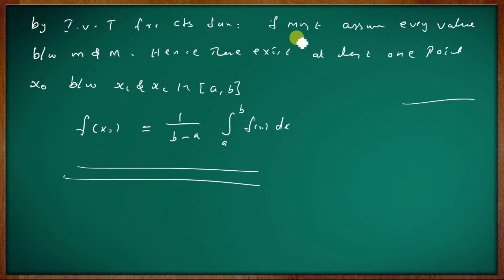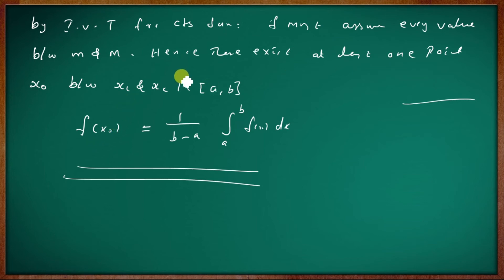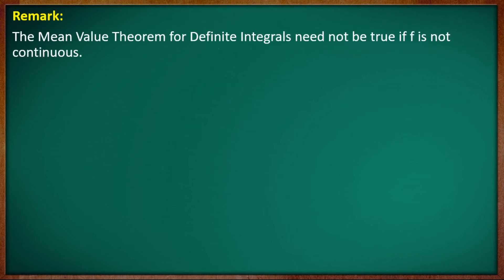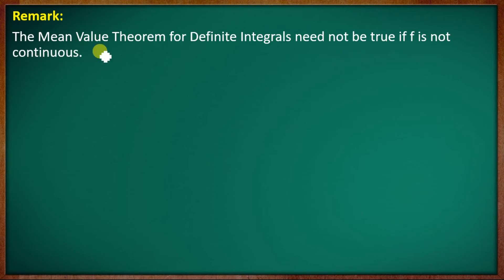By the intermediate value theorem, for a continuous function f, f must assume every value between m and M. Hence there exists at least one point x₀ between x₁ and x₂ in closed interval [a, b] such that f(x₀) equals the average value. Remark: The mean value theorem for definite integrals need not be true if f is not continuous.